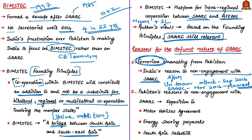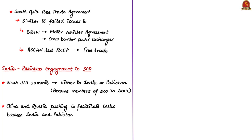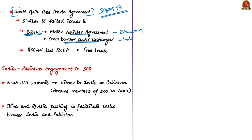So SAARC is more or less now defunct. The second reason is Pakistan's opposition to connectivity projects such as the motor vehicles agreement, energy sharing proposals, South Asia satellite offered by India, and concerns raised about the South Asia Free Trade Area agreement. Even in the BBIN framework — Bangladesh, Bhutan, India, Nepal — the motor vehicles agreement has failed to be implemented due to opposition from Bhutan, and there are concerns about cross-border power exchanges within BBIN as well.